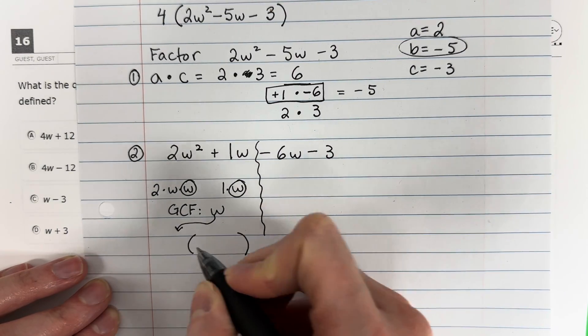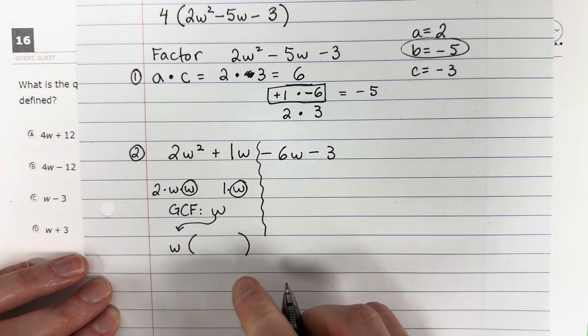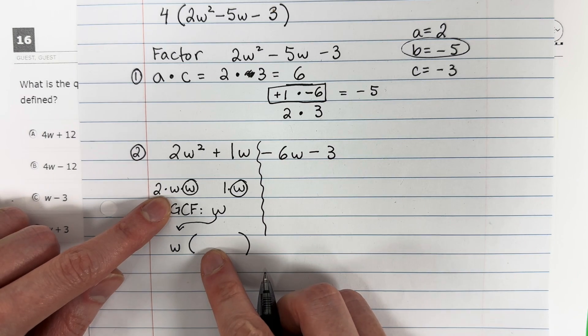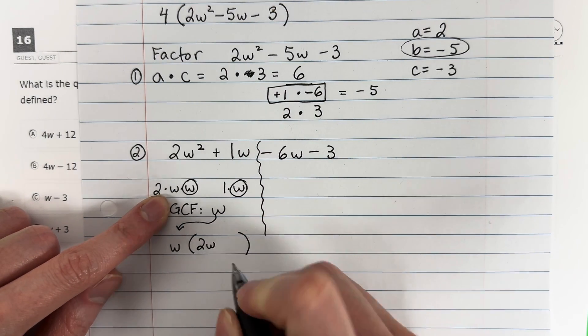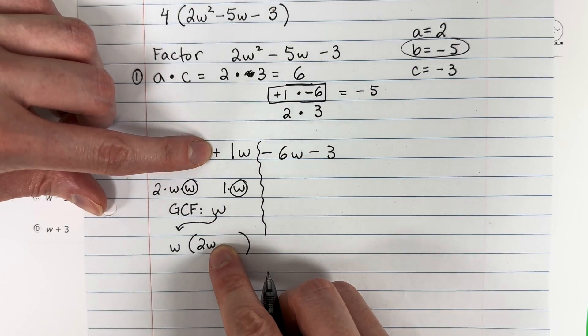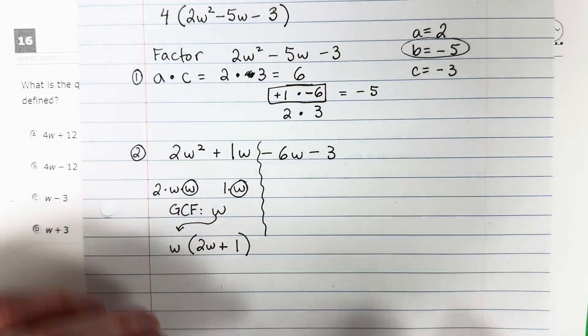You're going to open your parenthesis. You're going to put what they have the same on the outside, the GCF, the greatest common factor. And then what they have different, you're going to put inside. What do they have different here? I have 2w. The sign in the middle needs to be the same as here, plus. And then here, what's different is 1.